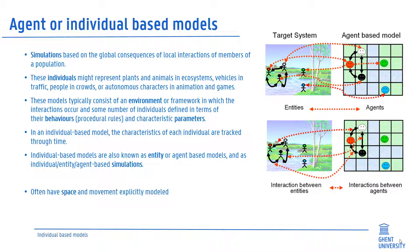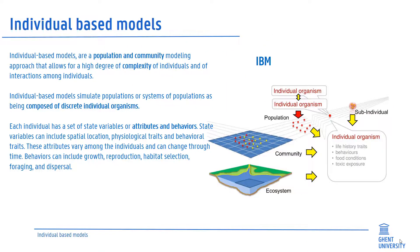In an individual-based model, the characteristics of each individual are tracked through time, and often they have space and movement explicitly modeled. Individual-based models are a population and community modeling approach that allows for a high degree of complexity of individuals and of interactions among individuals.